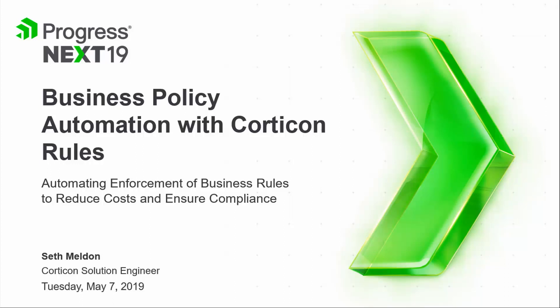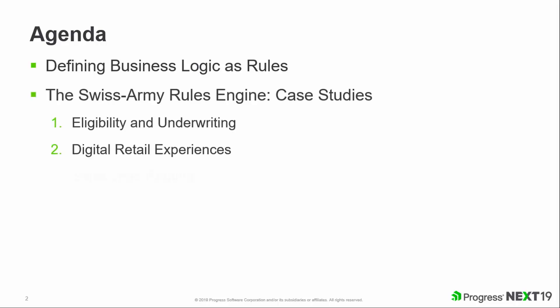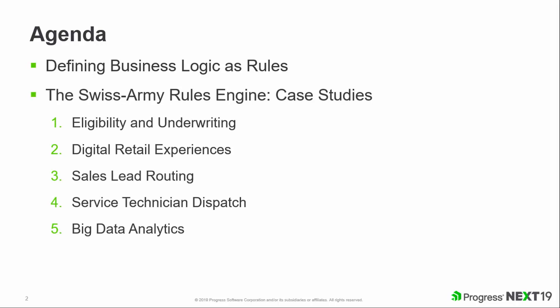A constant theme with Corticon is consistency. There are a lot of use cases that span many different types of projects. I'm going to talk about things that have nothing to do with one another, but each are pretty interesting. These five different topics are examples that aren't necessarily related, but they'll hopefully open your eyes to types of use cases that people are now thinking of rules for — that maybe one, five, or ten years ago they weren't turning to rules engines for.